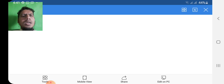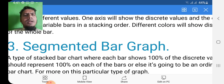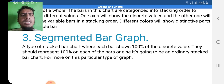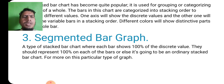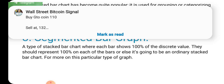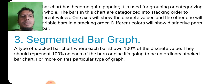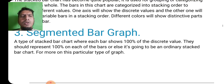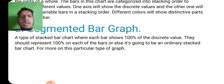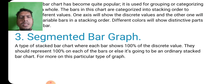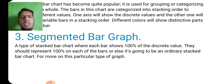तो यह है तीसरा graph जो हम पढ़ रहे हैं — segmented bar graph. यह a type of stacked bar chart है, where each bar shows 100% of discrete value. कहता है कि यह bar chart, stacked bar chart की ऐसी type है जिसमें discrete value जो है वो 100% show होती है. They should represent 100% on each bar, or else it is going to be an ordinary stacked bar chart. तो segmented bar graph की यह दूसरी type है.